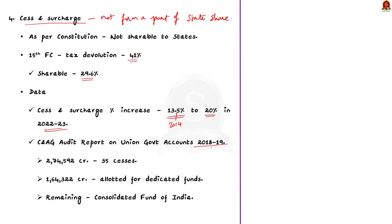As per the CAG audit report on union government accounts for 2018-19, in the year 2018-19 nearly Rs. 2,75,000 crore was collected from 35 cesses. Out of this, only Rs. 1,64,000 crore has been credited to the dedicated funds, and the rest was retained in the Consolidated Fund of India. This is another instance of the center denying states their due share as per constitutional provisions.